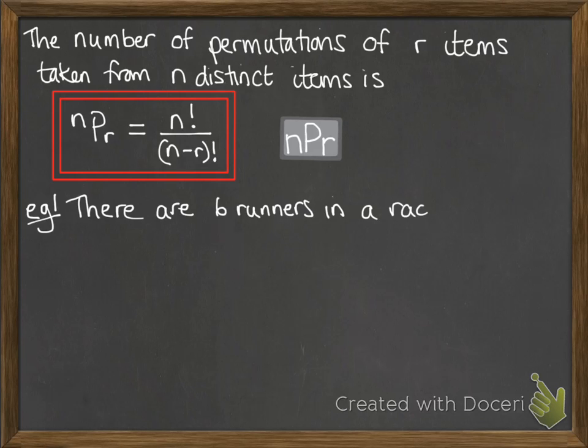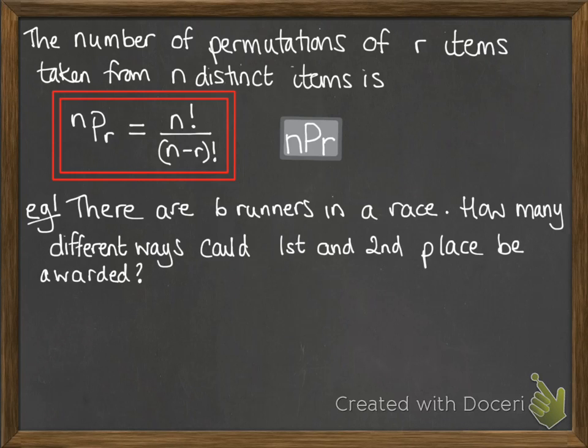So let's have a look at an example. There are 6 runners in a race. We want to know how many different ways that 1st and 2nd place could be awarded. Now this is a permutation. If you put somebody in 1st place and somebody else in 2nd place, that would be a different outcome to if you had switched those 2 over. We've got 6 items to choose from, 6 people in the race. We're picking 2 of them. That would expand to 6 factorial over 6 minus 2 factorial. That simplifies to 4 factorial on the bottom. So that would just leave us with the 6 times 5 at the top. And that gives us 30.